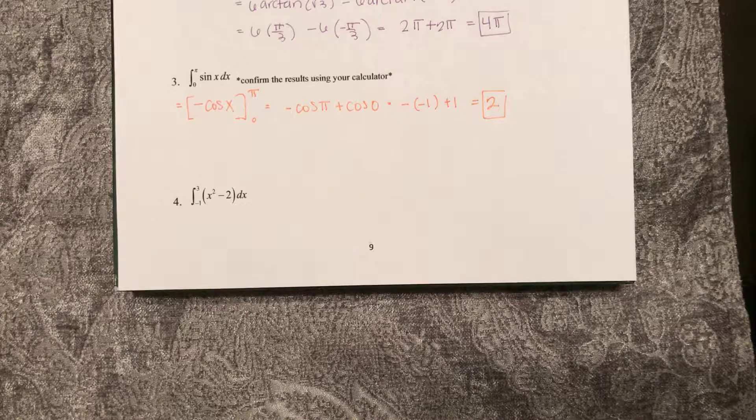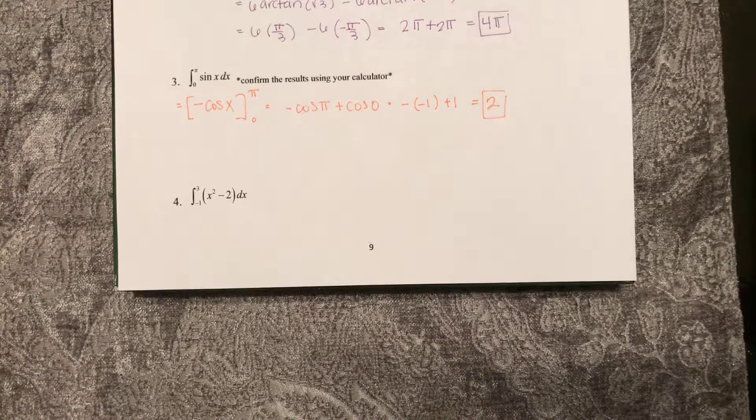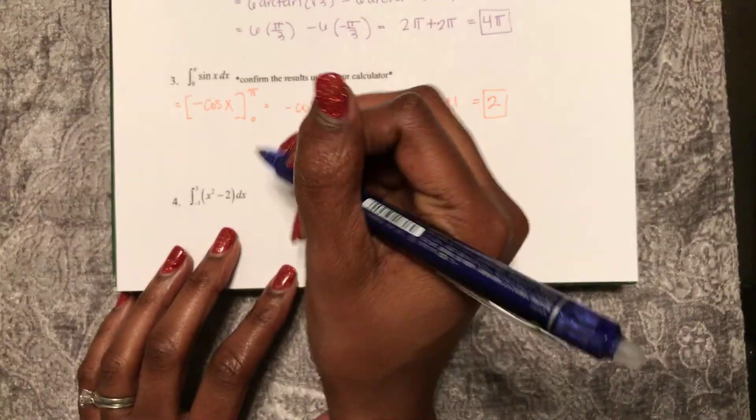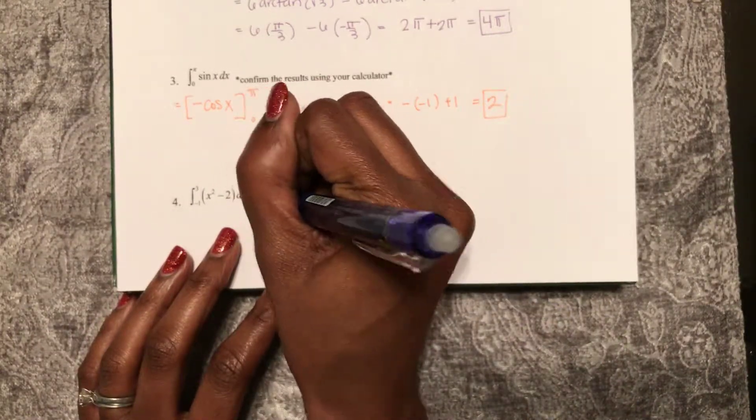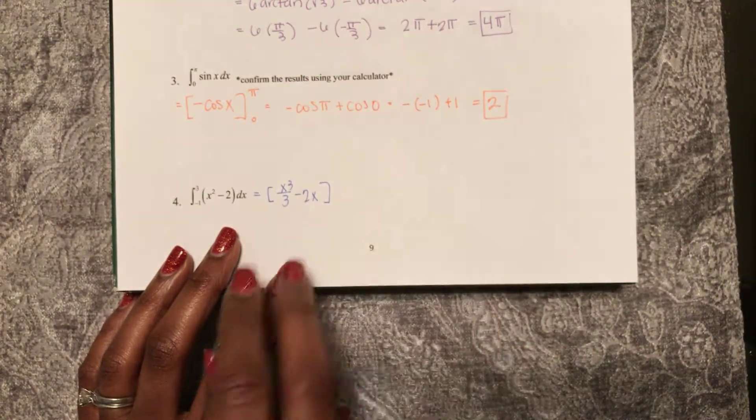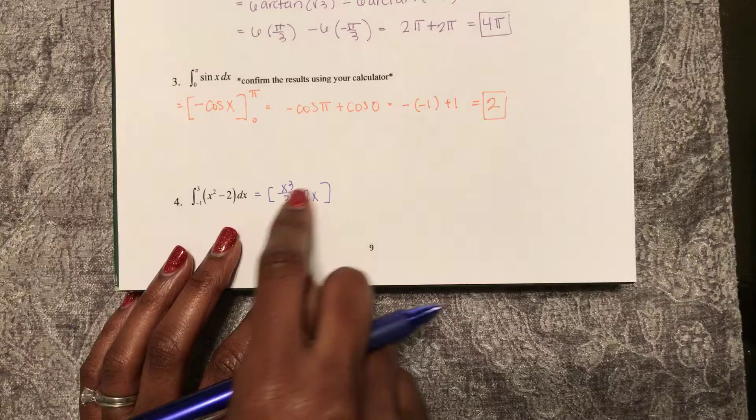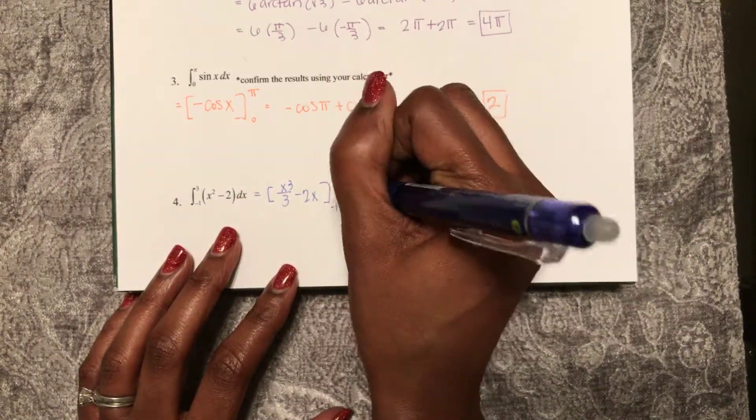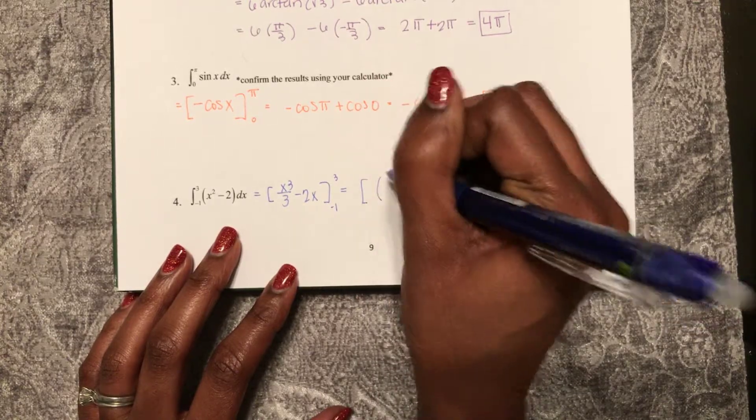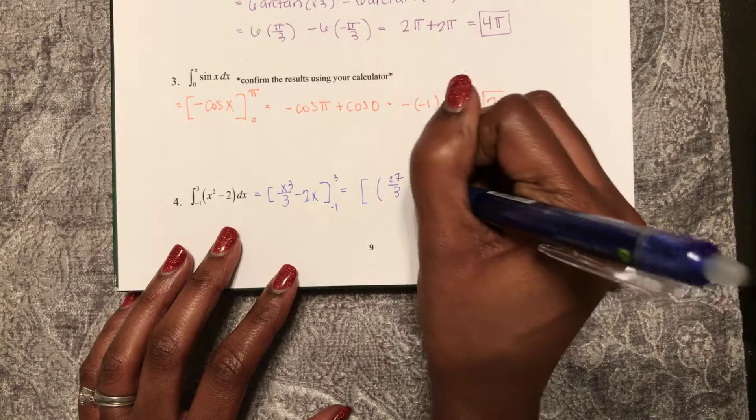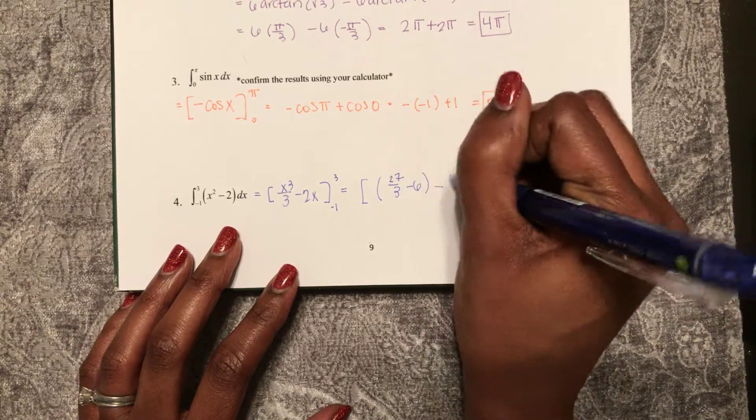Here's one more example of a definite integral. We will find the antiderivative of x squared minus 2, that is x cubed over 3 minus 2x. When you have more than one term, you should put the brackets on both sides, being evaluated from negative 1 to 3. So that equals 27 over 3 minus 6 minus